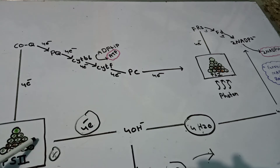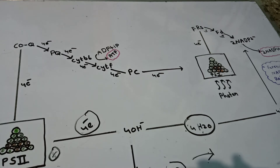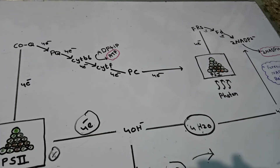The function of the accessory pigments is to trap light energy of different wavelengths from the sun and transfer that energy to the reaction center. So the function of accessory pigments is to transfer light energy of different wavelengths to the reaction center.